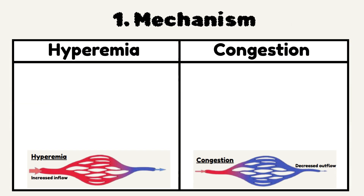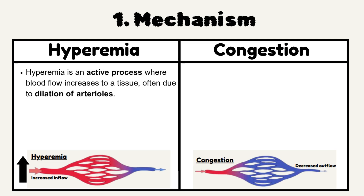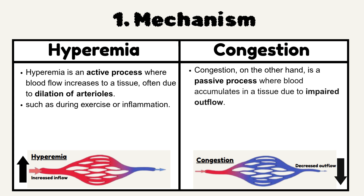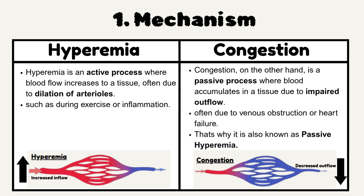Number 1: Mechanism. Hyperemia is an active process where blood flow increases to a tissue, often due to dilation of arterioles, such as during exercise or inflammation. Congestion, on the other hand, is a passive process where blood accumulates in a tissue due to impaired outflow, often due to venous obstruction or heart failure. That's why it is also known as passive hyperemia.